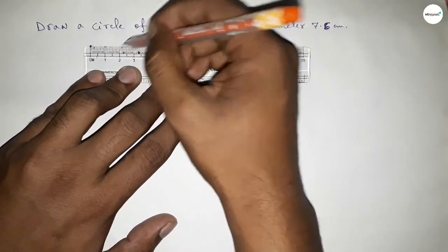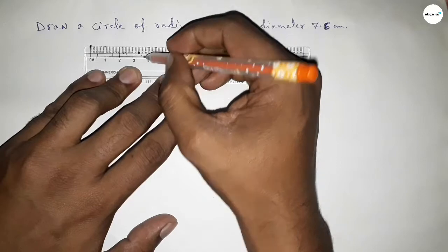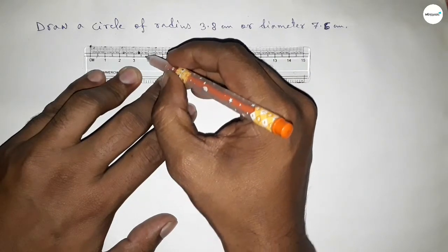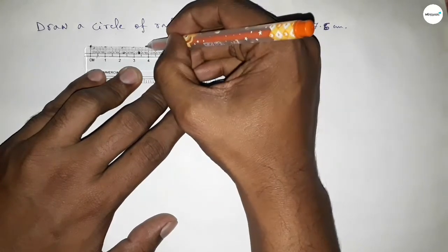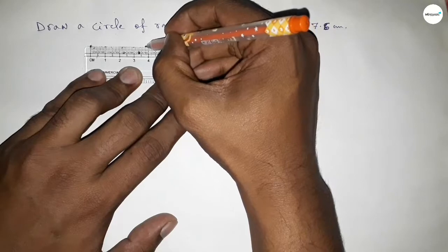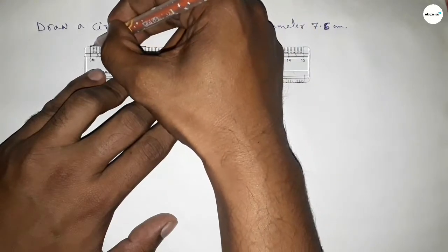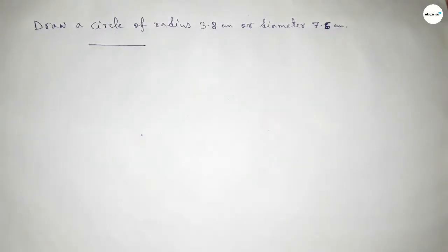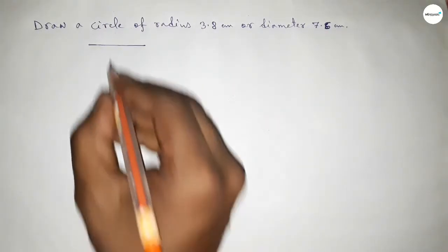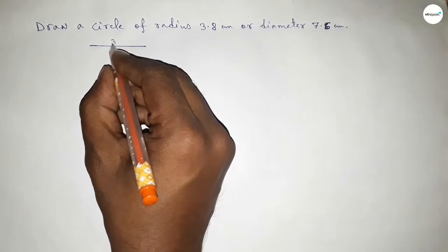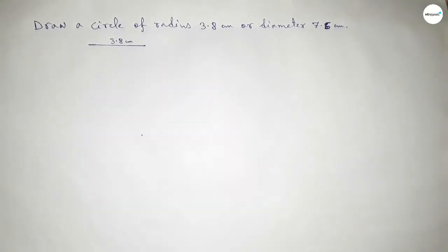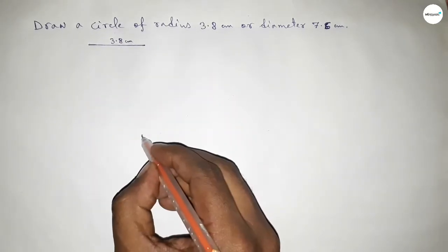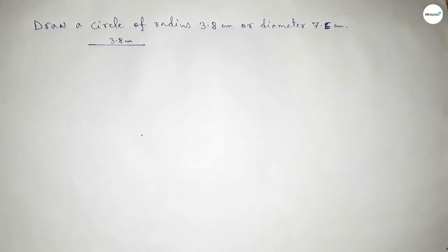Starting from 0: 1, 2, 3.5, 6, 7, 8 — so this is 3.8. We know that the radius of a circle is equal to half of the diameter, so this is 3.8 centimeters. Now taking here a point.